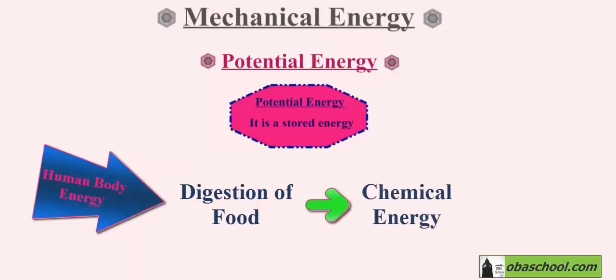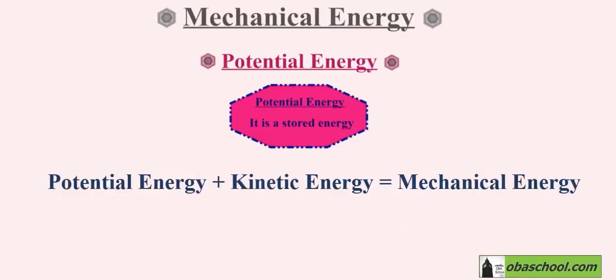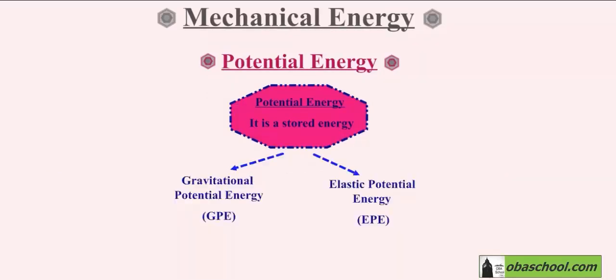The human body energy comes from the digestion of food that transforms into chemical energy, and that is where you get your energy from. Let's take this equation: the mechanical energy is equivalent to the potential energy plus the kinetic energy.